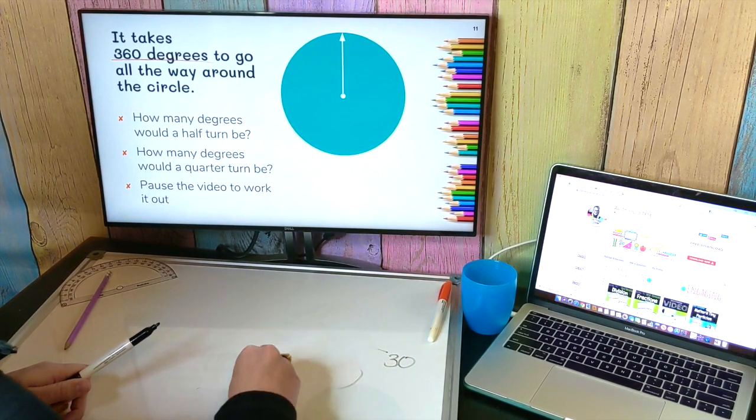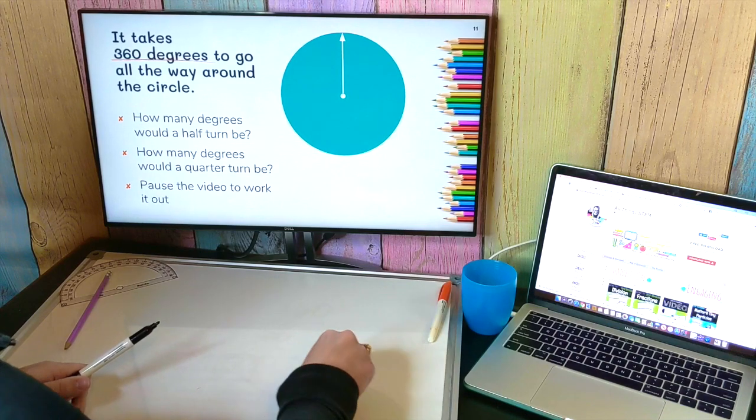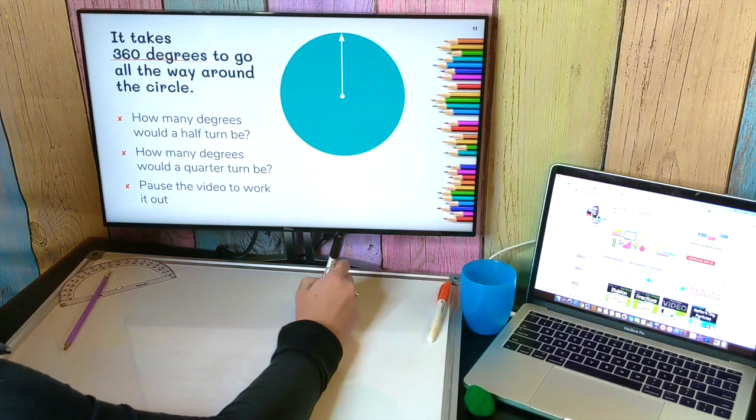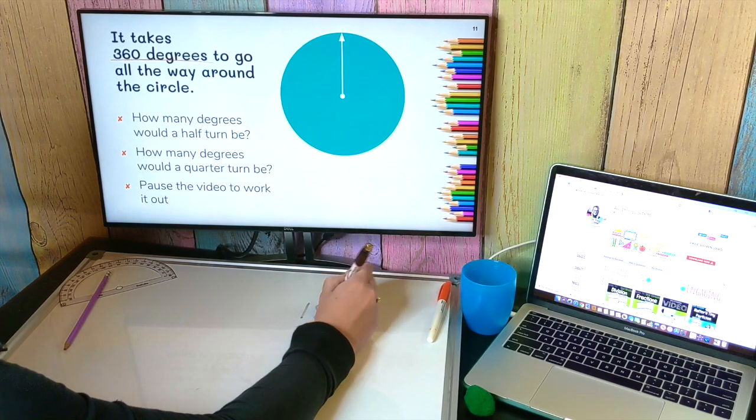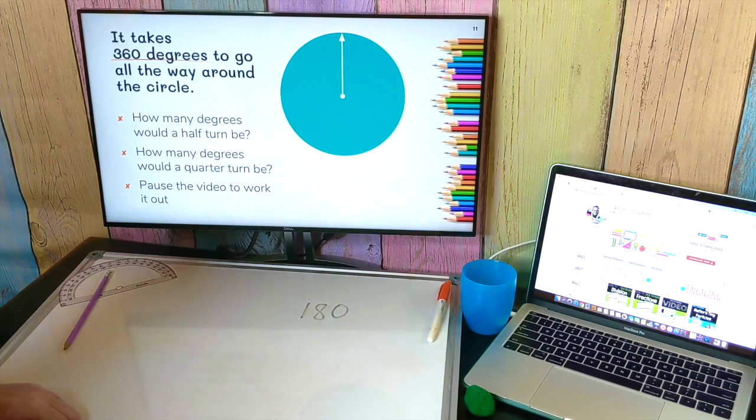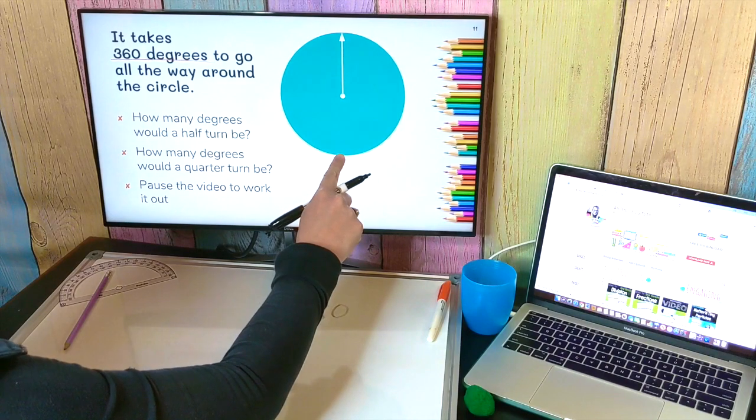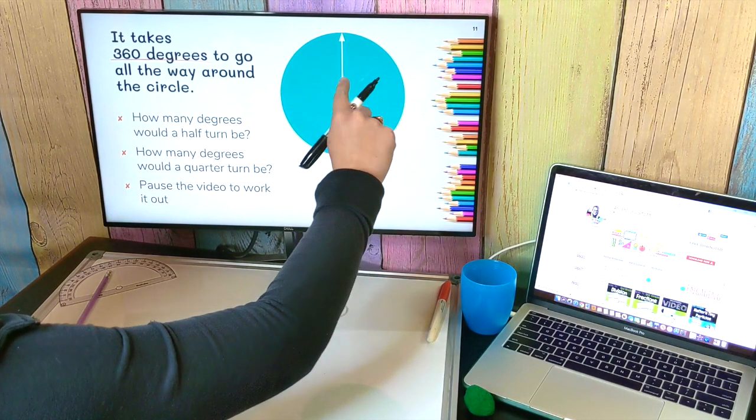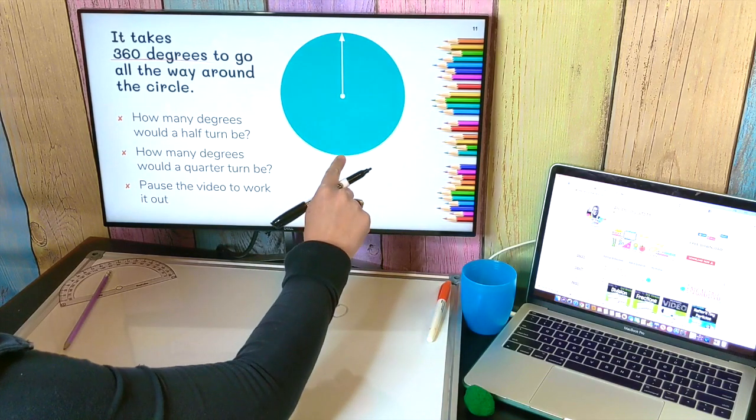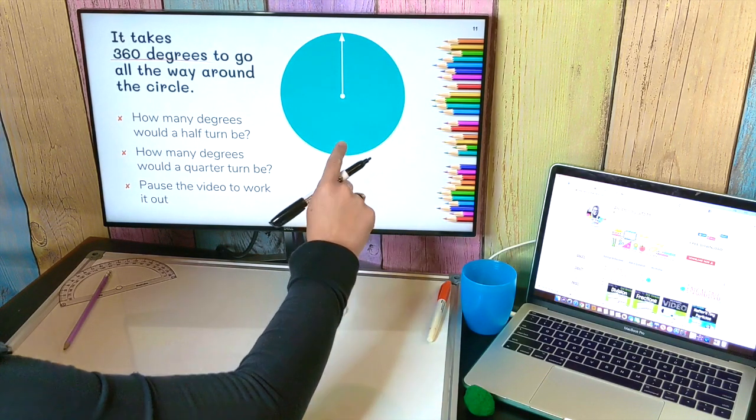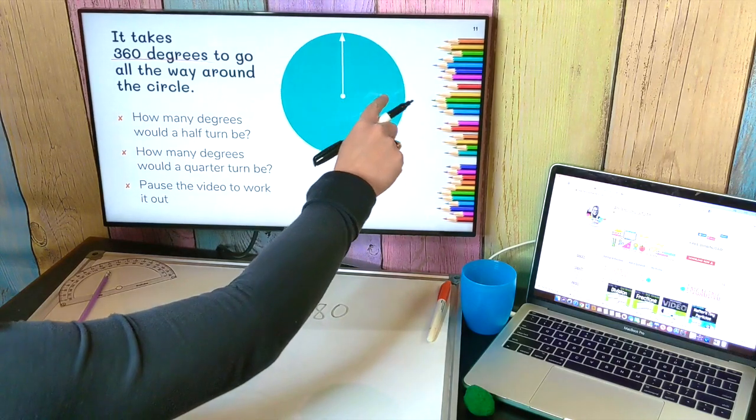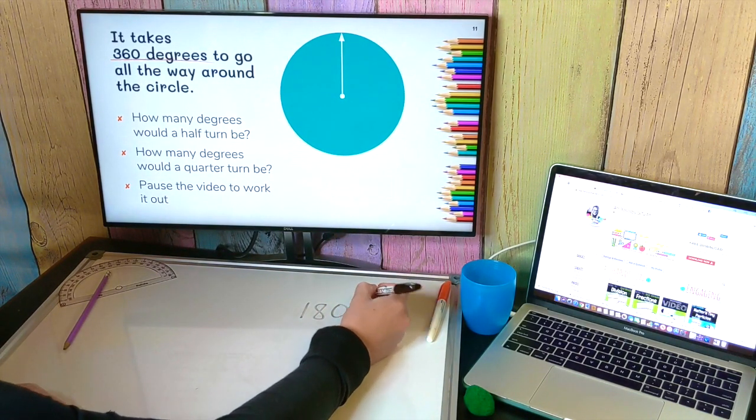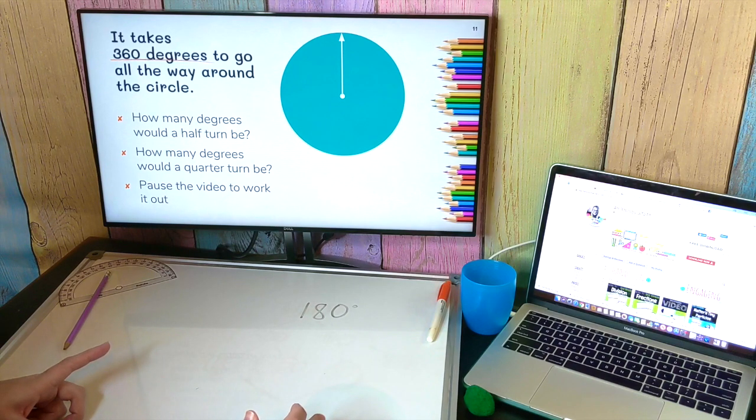The next thing you needed to do is figure out how many degrees it would take just to make a quarter turn. Well, I already know that half a turn is 180 degrees. So that would get me to here. But I want to know what a quarter turn would be. Well, I know a quarter is just half of a half, so that's the strategy I chose to use to find what the quarter turn would be.